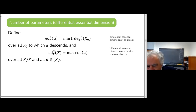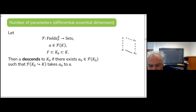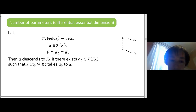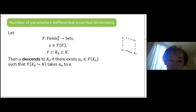In response to a question about the arrow K₀ → K: the arrow represents the inclusion of a subfield. F is a functor, so we have to define it on morphisms, and the morphism here is the inclusion of K₀ inside K.